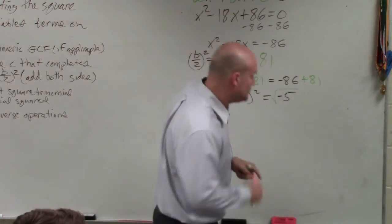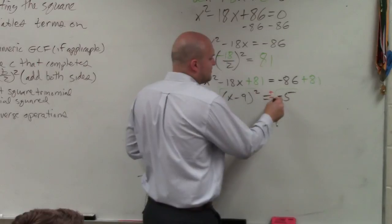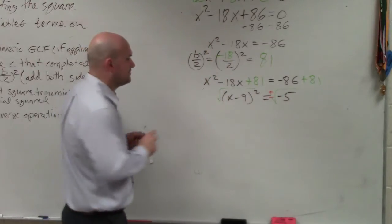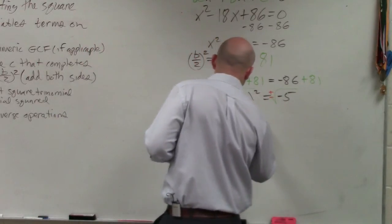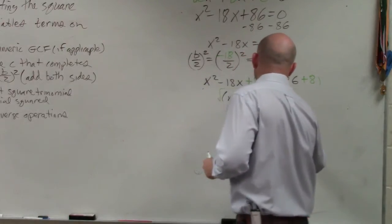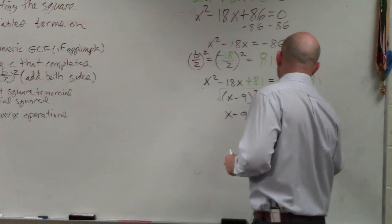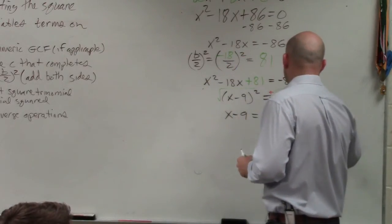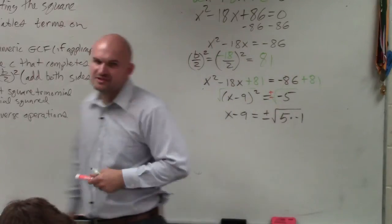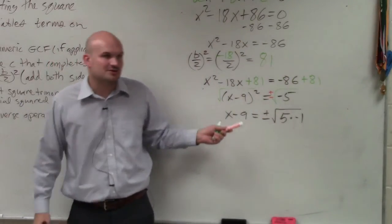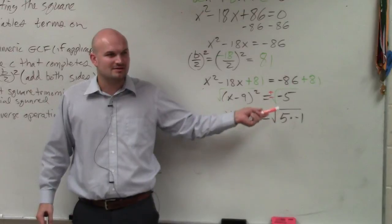Remember when you take the square root, you have to include the positive and the negative. OK? Therefore, this becomes x minus 9 equals plus or minus the square root of 5 times negative 1. I broke apart negative 5 into 5 times negative 1 because in algebra 2, do you guys remember what the square root of negative 1 is? It's i.